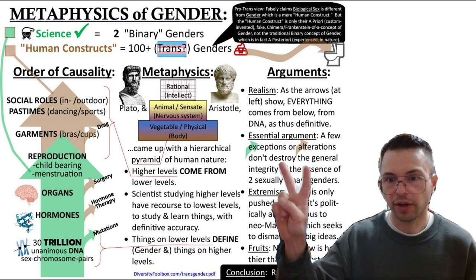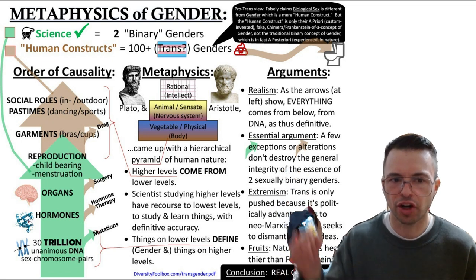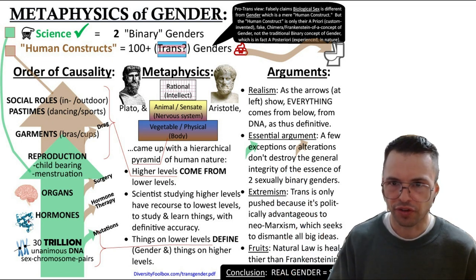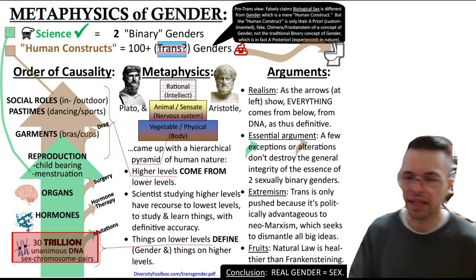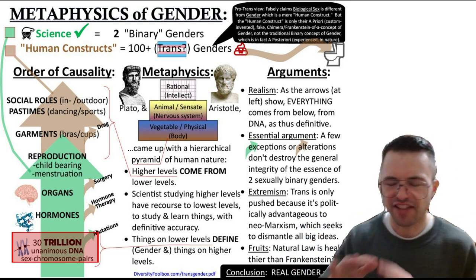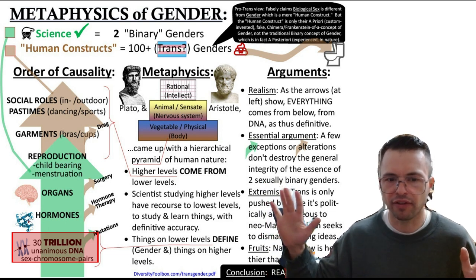First, two soundbite answers for why trans is anti-science, which might be instant argument winners. First, a scientific fact that there are, within each person, 37 trillion discrete pieces of DNA evidence of their gender.